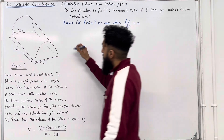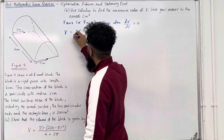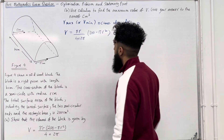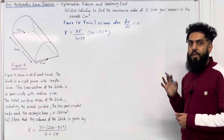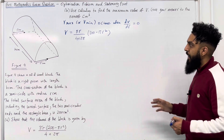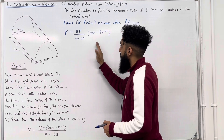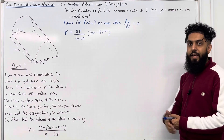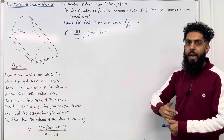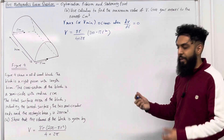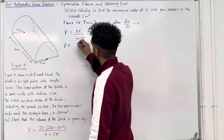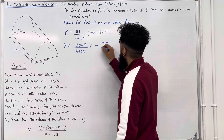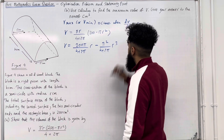Starting with the formula for V, I'm going to rewrite it as V equal to pi r over (4 plus 2 pi) multiplied by (200 minus pi r squared). We want to work out dV/dr. Although this is a product of two functions and we could use the product rule, the most efficient method is to expand the bracket first and then use year 1 differentiation — bring down the power, subtract 1 from the power. Expanding gives V equal to 200 pi over (4 plus 2 pi) r minus pi squared over (4 plus 2 pi) r cubed.